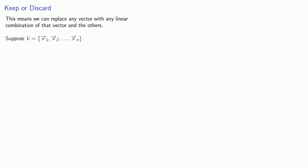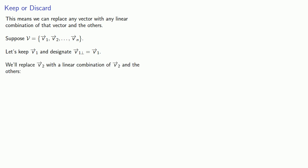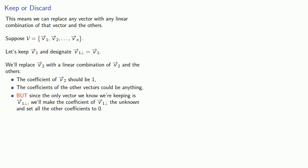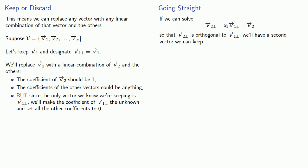This means we can replace any vector with any linear combination of that vector and the others. So let's proceed as follows. Suppose our set of vectors is v1, v2, and so on. We'll keep v1 and designate v1 perpendicular to be our first vector. We'll replace v2 with a linear combination of v2 and the others, where the coefficient of v2 is 1, and we'll make the coefficient of v1 perpendicular the unknown, setting all other coefficients to 0. So v2 perpendicular equals x1·v1 perpendicular plus v2. If we can solve this so that v2 perpendicular is orthogonal to v1 perpendicular, we have a second vector to keep.